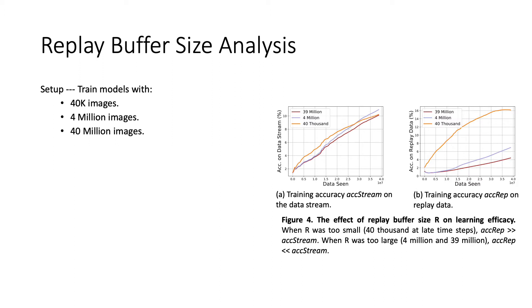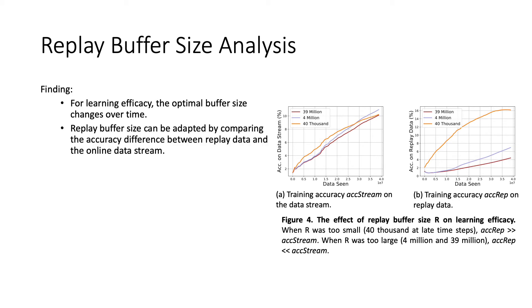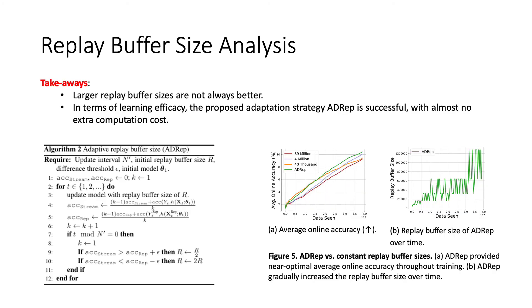For replay buffer size analysis, we train models with varied replay buffer sizes. We observed that for learning efficacy, the optimal buffer size changes over time. We also find that the replay buffer size can be adapted by comparing the accuracy difference between replay data and the online data stream. Specifically, when the replay buffer size is too small, the training accuracy on the data stream will be much smaller than the accuracy on replay data, and vice versa if the replay data is too large. Based on the observation, we proposed an algorithm that can adapt the replay buffer size over time to improve learning efficacy, with almost no extra computational cost.